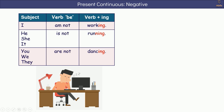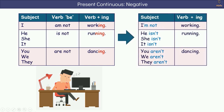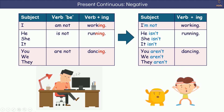We can also use contractions in negative sentences. I'm not working. He, she, it isn't running. You, we, they aren't dancing.